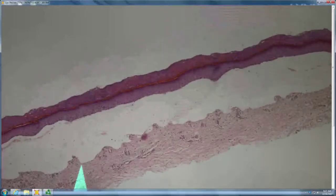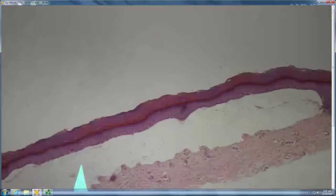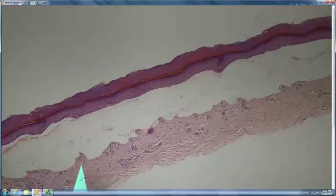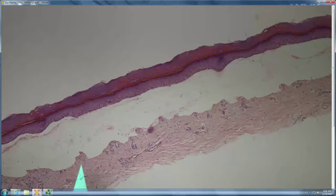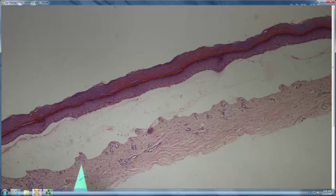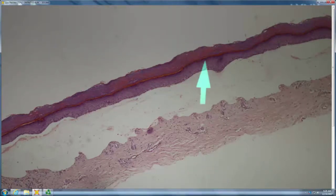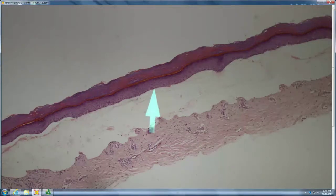It looks like we have a subepidermal blister with maybe some festooning. Yep. So subepidermal blister, maybe some festooning, makes you think of? PCT. Makes you think of PCT. It should be on acral skin, which the corneum looks like. Right? It should be on acral sun-damaged skin, and it looks like there's a little bit of solar elastosis in there. And then you look for caterpillar bodies, and there's maybe a little caterpillar wannabe there. And then you look for hyalinization around those vessels, because you always should have some hyalinization.